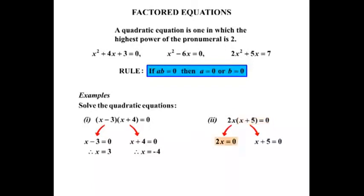Now, solving that equation, 2 times what makes 0? Well, of course, x must equal 0 in that case. x plus 5 equals 0. To solve that, we'll take the plus 5 over, becomes minus 5. So therefore, x equals negative 5.